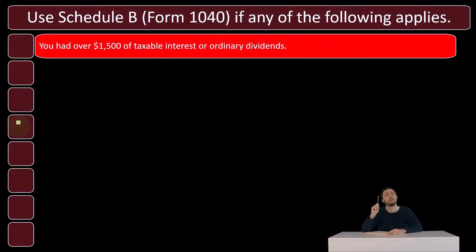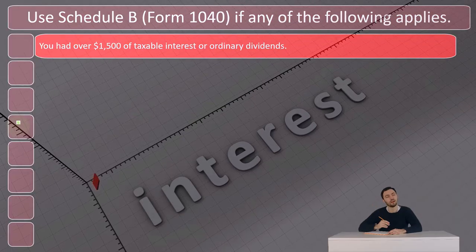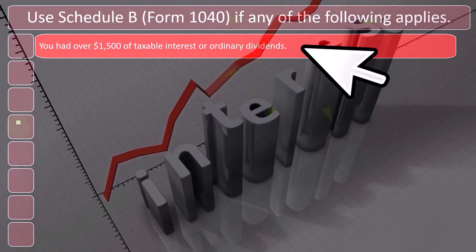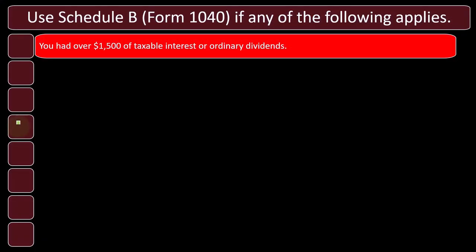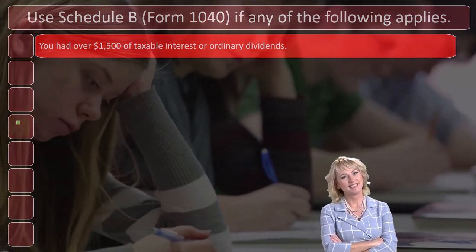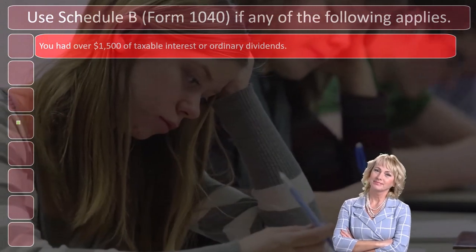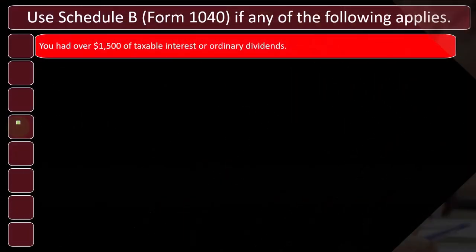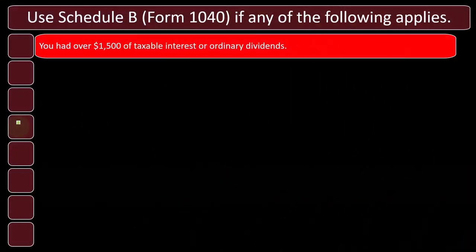You'll use Schedule B with Form 1040 if any of the following apply. Typically, if you have interest income you'll report it from your 1099. If your interest income exceeds the threshold, you report it not only on the first page of the 1040 but also on Schedule B. Specifically, if you had over $1,500 in taxable interest or ordinary dividends, Schedule B is required.